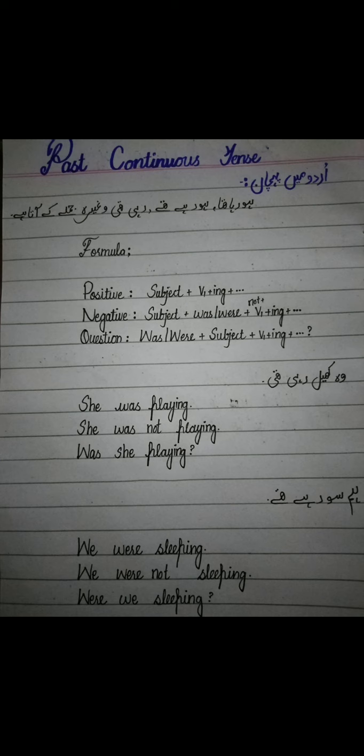یہ تو ہو گیا singular sentence، اب ہم plural کا دیکھتے ہیں: 'ہم سو رہے تھے' — رہے تھے سے یہ plural sentence ہے۔ Positive: We were sleeping۔ Negative: We were not sleeping — ہم نہیں سو رہے تھے۔ Question: Were we sleeping? — کیا ہم سو رہے تھے؟ اسی طرح آپ نے اور بھی جتنے past continuous sentences ہیں do practice at your home۔